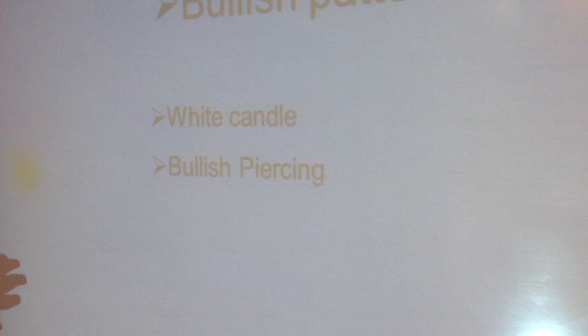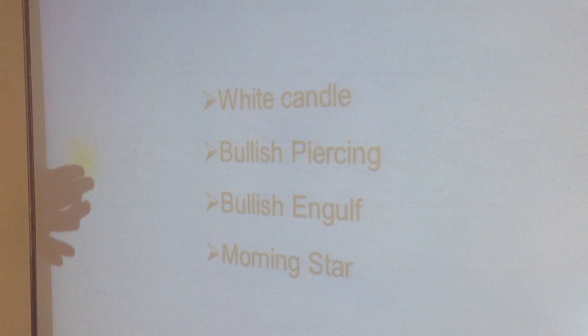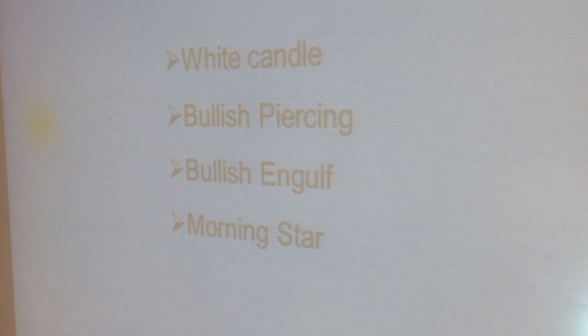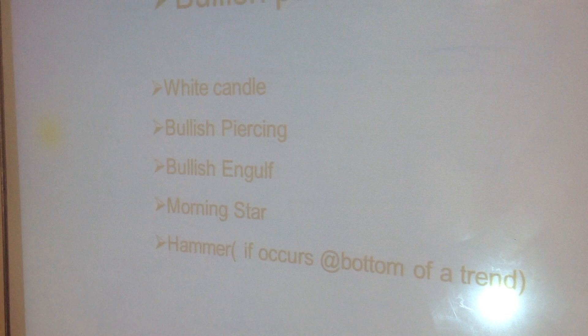First we will cover bullish patterns using Japanese candlesticks. There are five important bullish patterns: first is white candle, second is bullish piercing, third is bullish engulfing, fourth is morning star, and fifth is hammer pattern. These five patterns are very important, and although there are many different patterns, these five are the major ones.